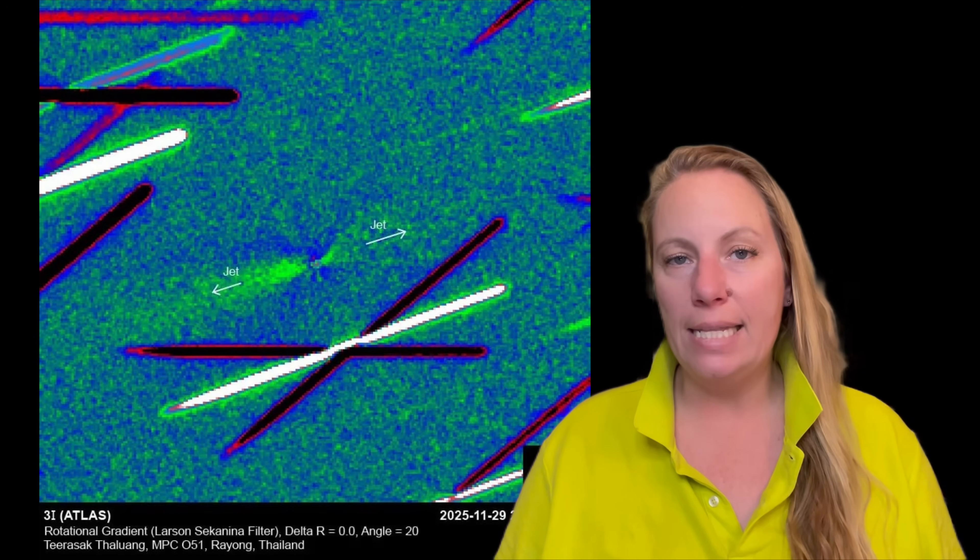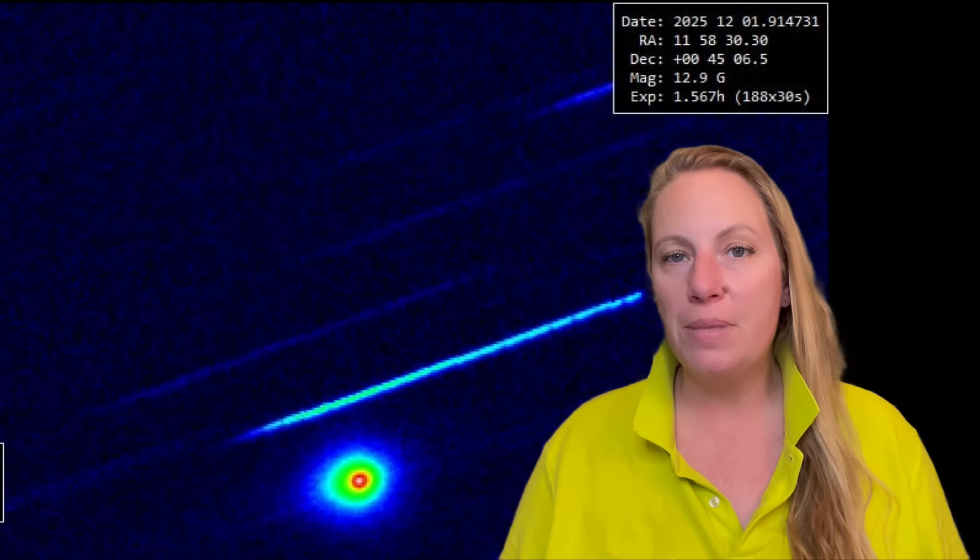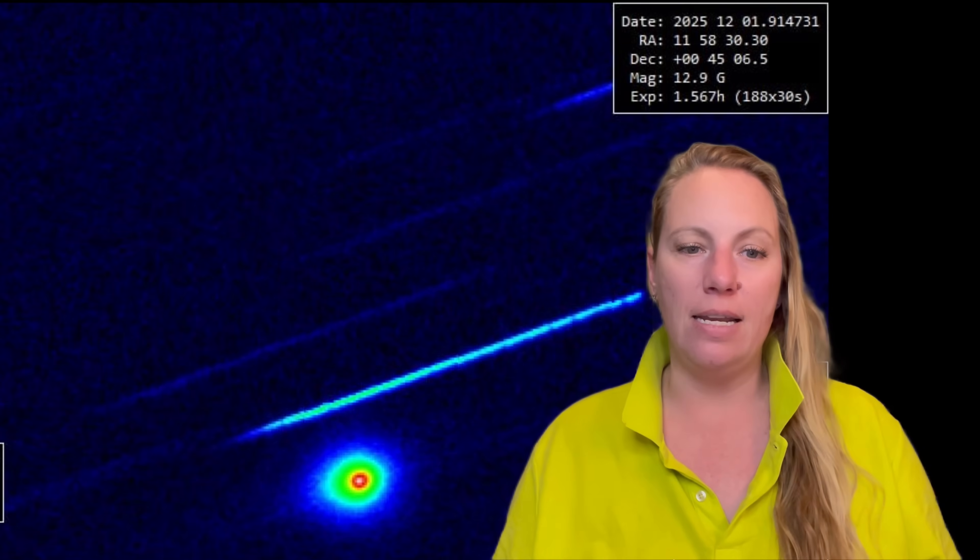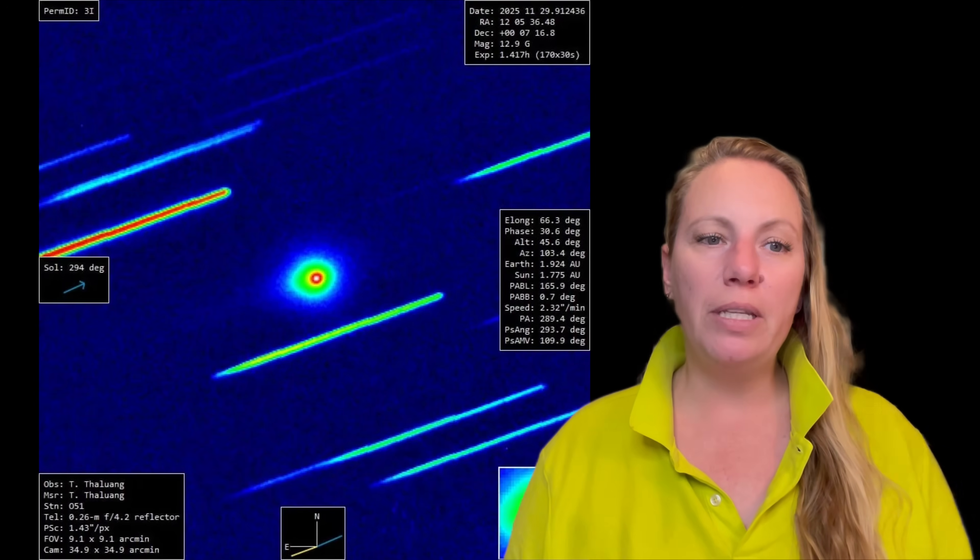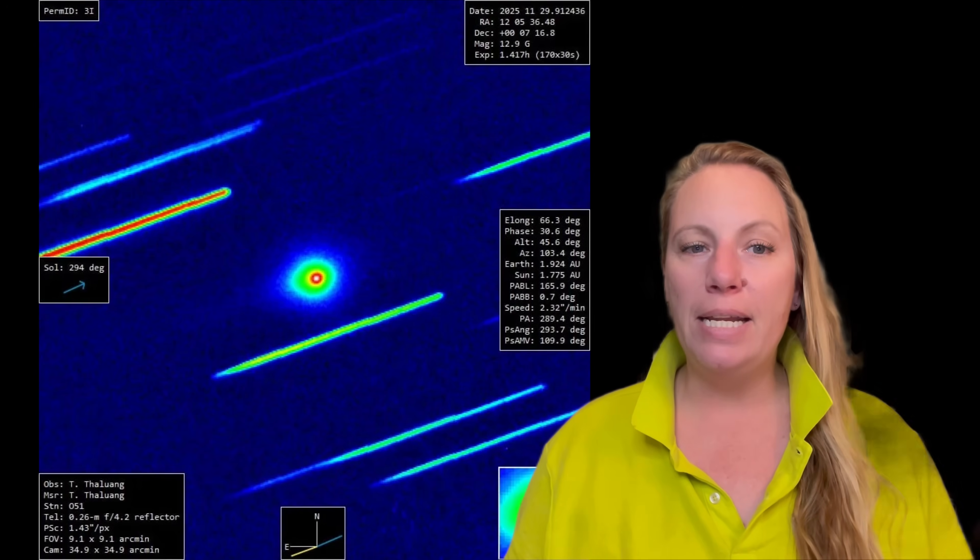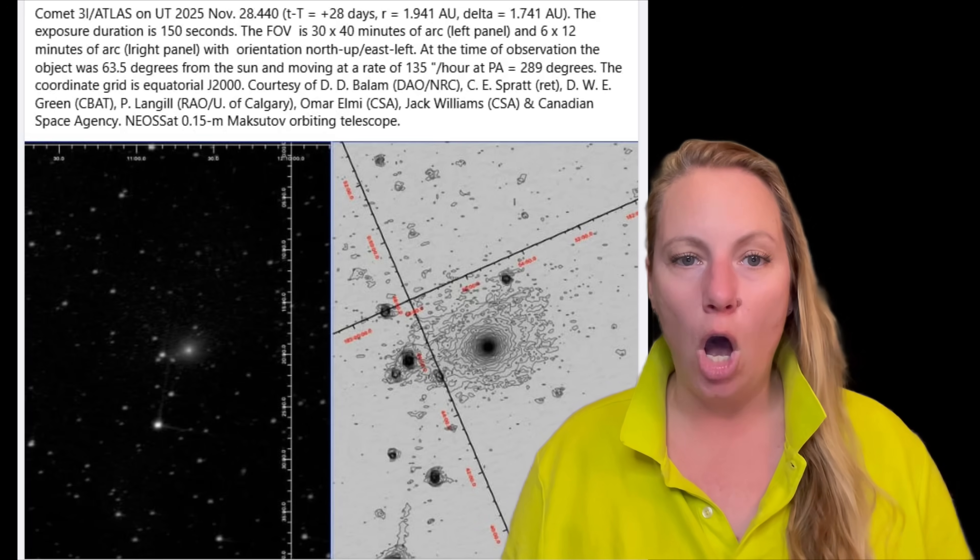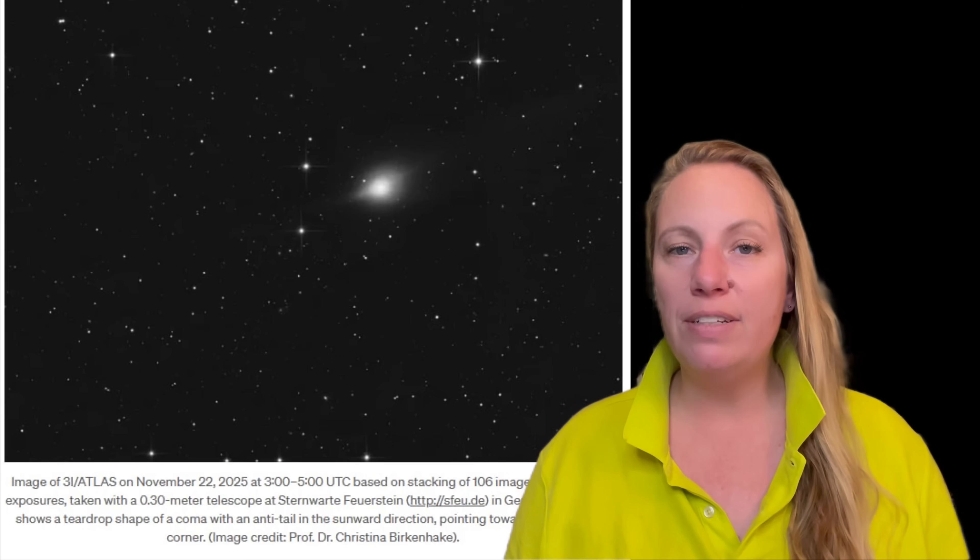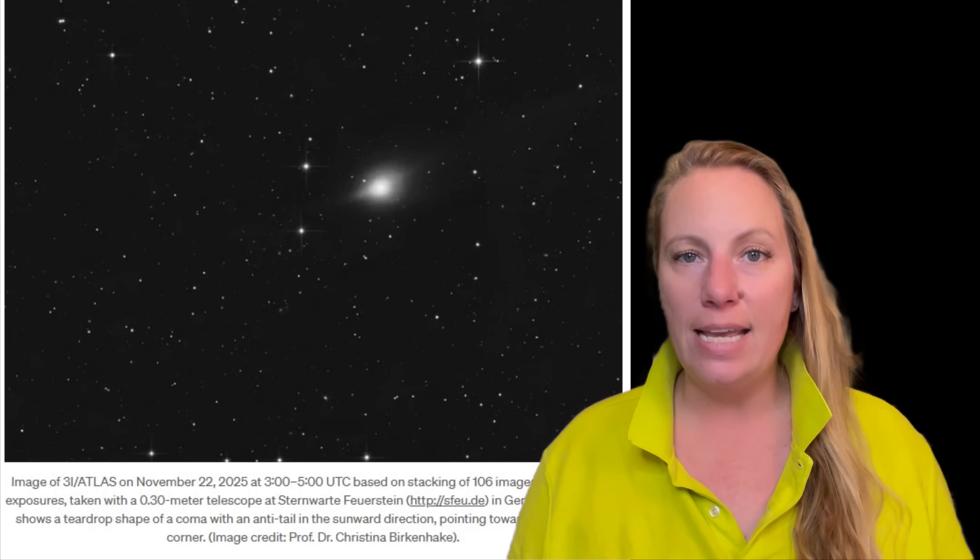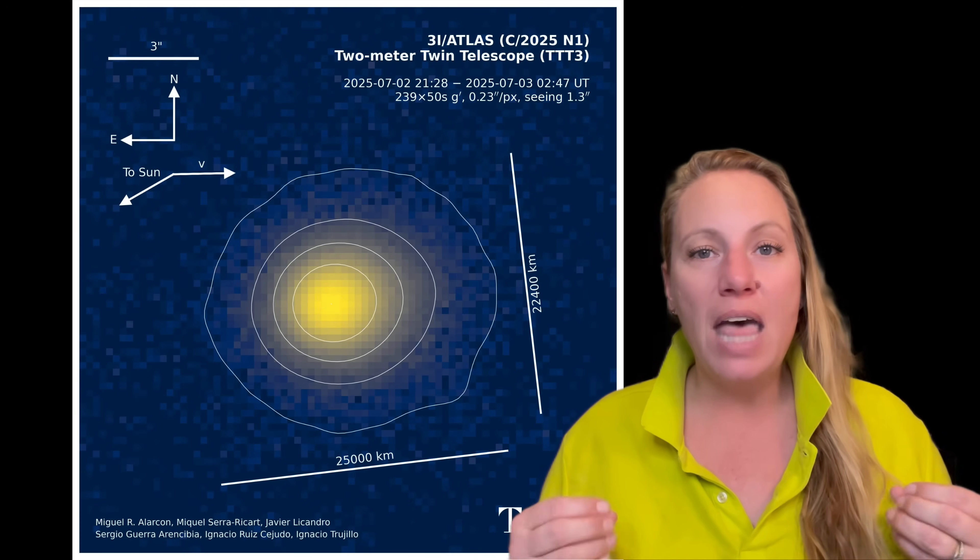So normally for comets, solar heating pushes gas and dust away from the sun, making the tail point away from the sun. So the anti-tail towards the sun is very unusual. Because of this, some researchers believe that perhaps a swarm of non-volatile, meaning not easily evaporated objects or chunks, are separated from 3I Atlas, maybe due to some kind of non-gravitational acceleration that 3I Atlas is displaying. Those chunks could be drifting sunwards, causing that weird glow shape. We've talked about this. Is 3I Atlas not alone? And what are these objects? A lot of mysteries. It's not that easy to explain with natural causes.